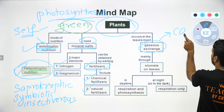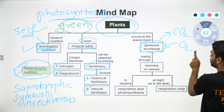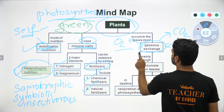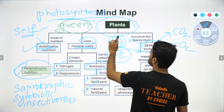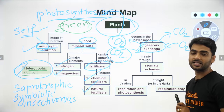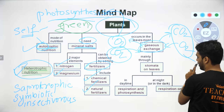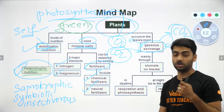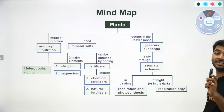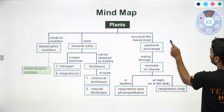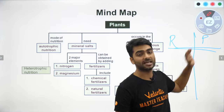Now, talking about gaseous exchange in plants — plants also give out CO2. Plants take in oxygen, give out oxygen, and also take in carbon dioxide. The process of taking in carbon dioxide and giving out oxygen is photosynthesis. Respiration is the process by which plants give out carbon dioxide and take in oxygen. Two important processes are taking place in the plant: respiration (R) and photosynthesis (P).